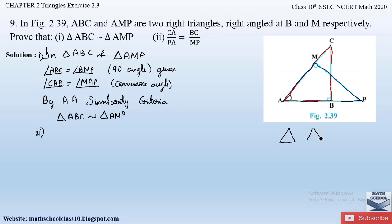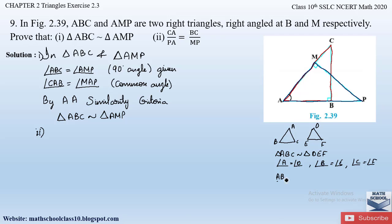For example, if triangle ABC is similar to triangle DEF, then the corresponding angles are equal: angle A = angle D, angle B = angle E, angle C = angle F. Likewise, the ratio of the corresponding sides will also be equal: AB/DE = BC/EF = AC/DF. This has already been proved in our theorems.